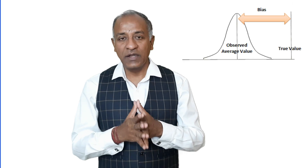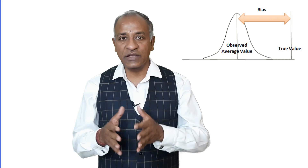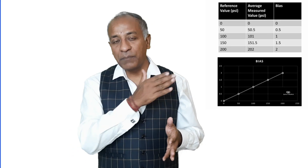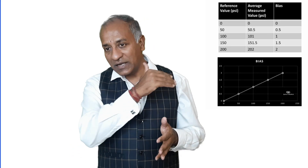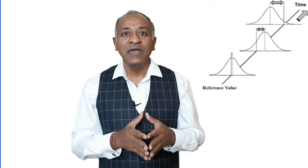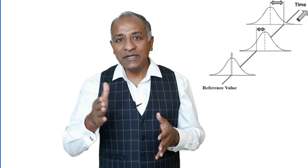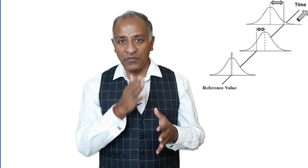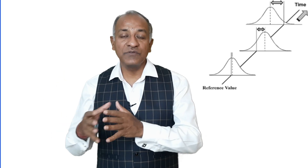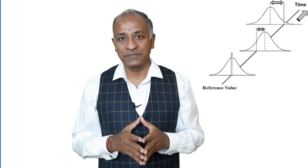To summarize: bias is the difference between the reference value and the actual value. Linearity is the bias over the entire range of the instrument. And stability is the bias over an extended period of time, checked at different times to see how much variation is happening.